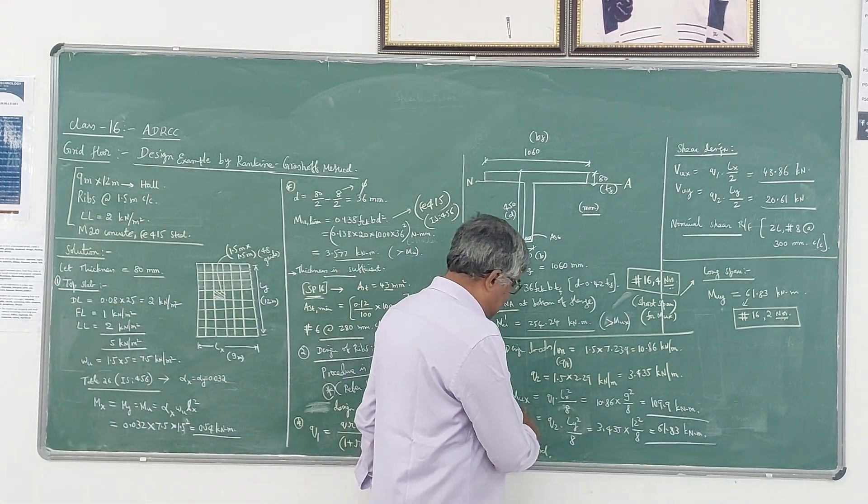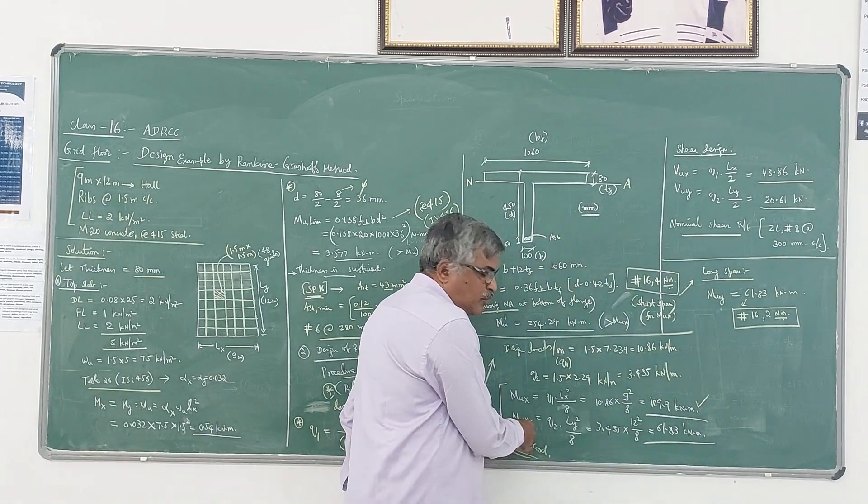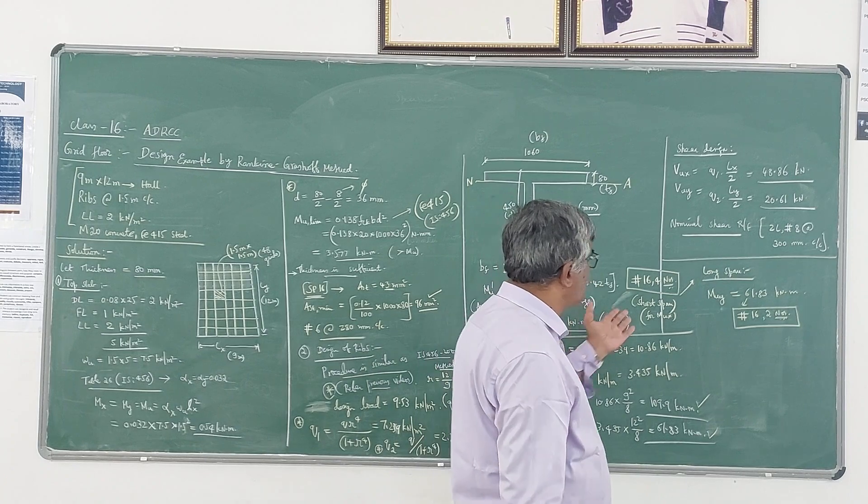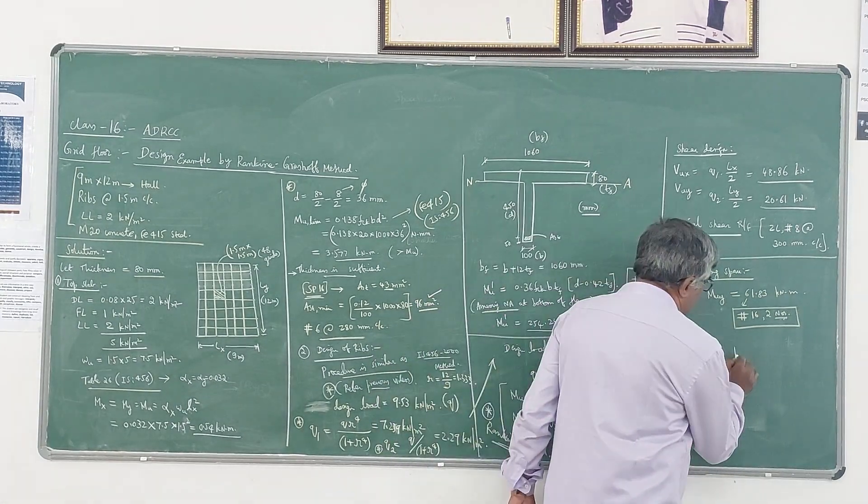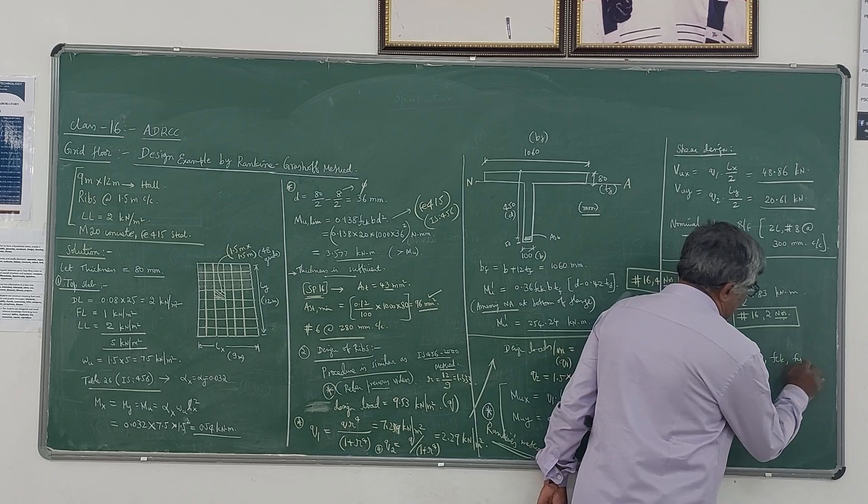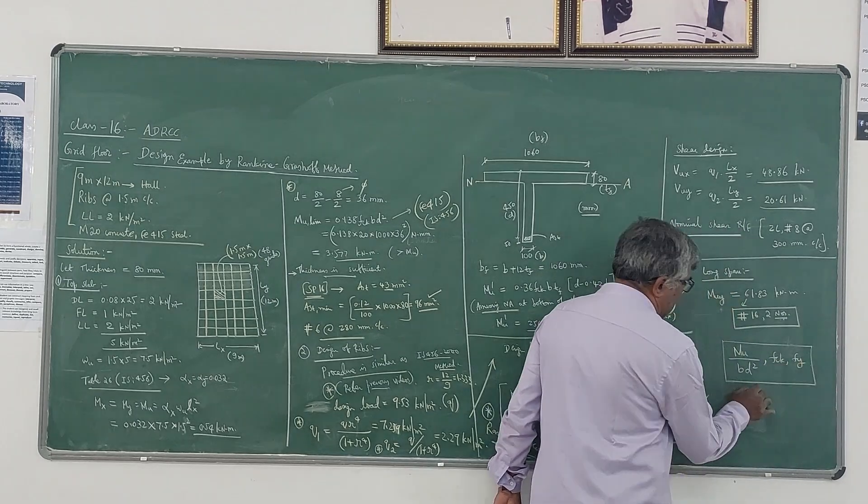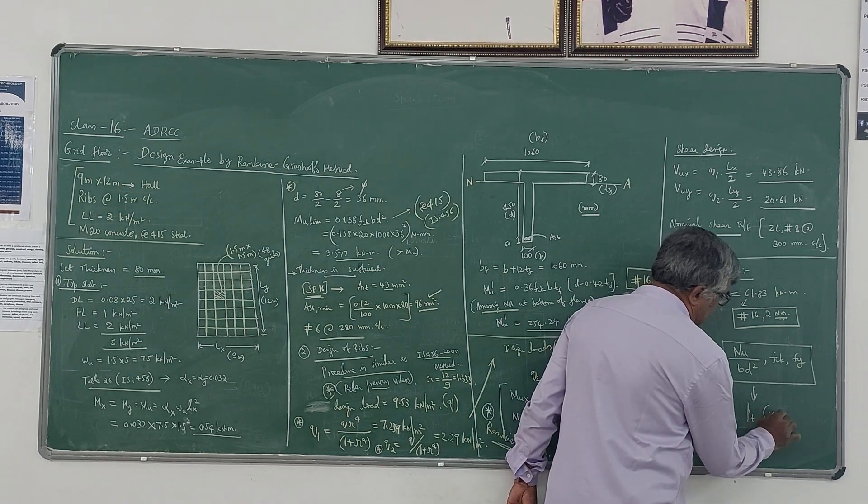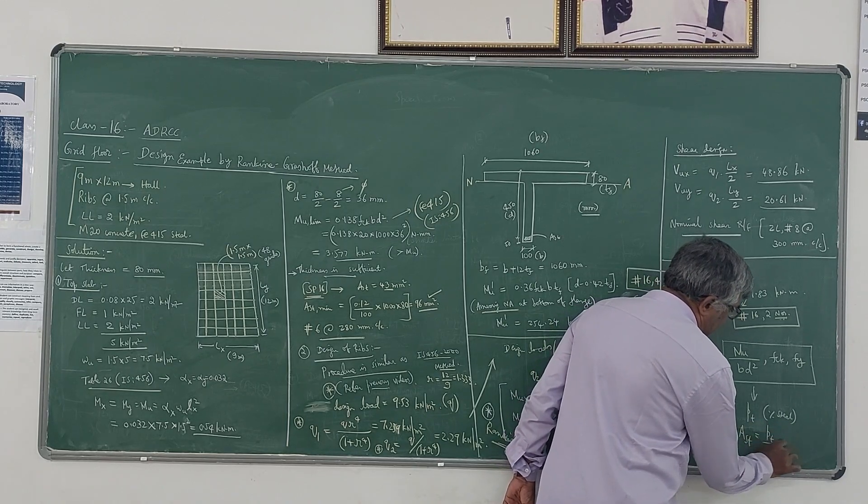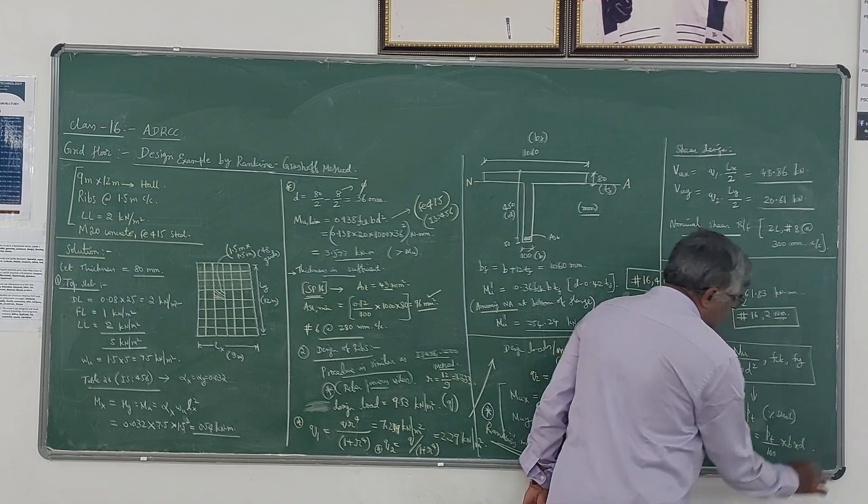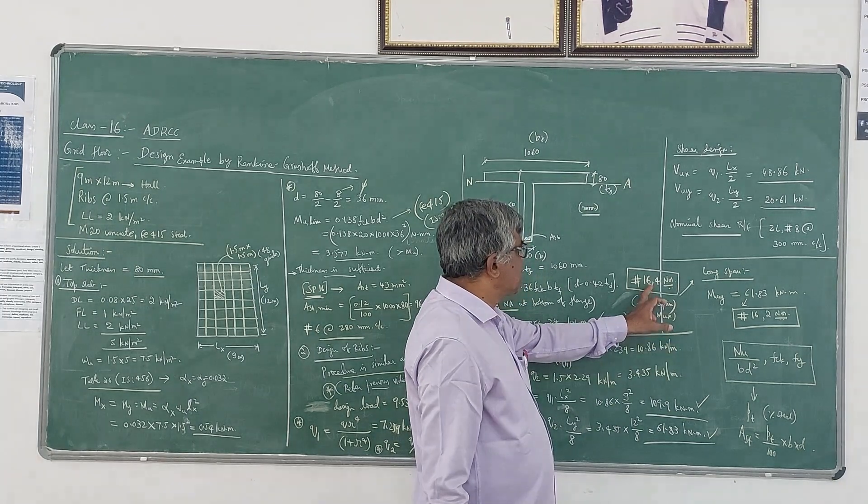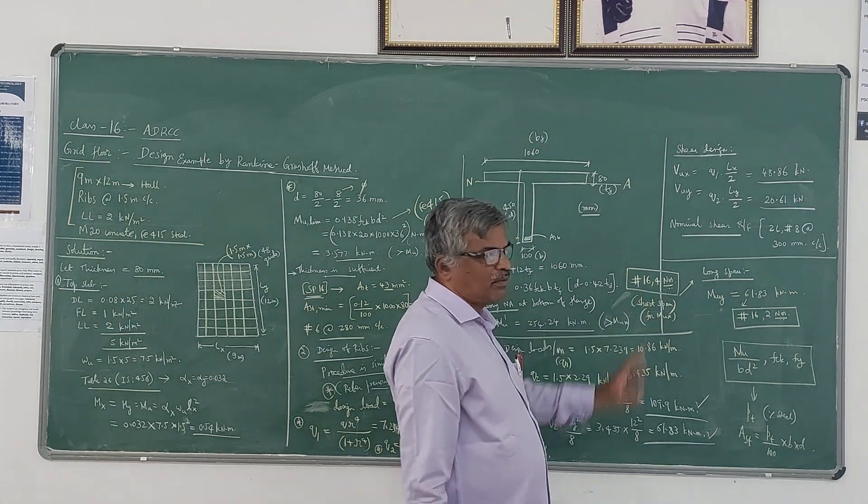Once you check that the section is safe, then you can compute the reinforcement in both directions. For calculating reinforcement in the shorter direction, we calculate MUX value. Directly you can get the value of reinforcement from SP16 by taking the values for beam design. Once you know MU value, MU by BD square, fck and fy - for these three values, you can directly get the value of pt, percentage of steel that can be provided as tensile steel. Once you get that pt value, Ast will be pt divided by 100 into b into d. For this moment 109.9 kilonewton meter, corresponding steel you have to provide is 4 bars of 16 mm diameter.